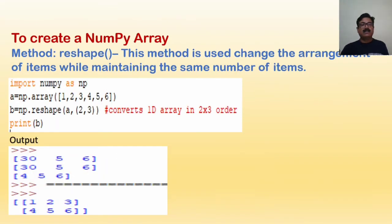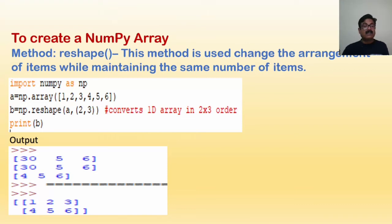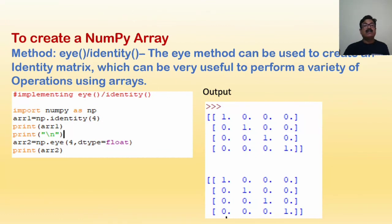The reshape method is used to change the arrangement of items while maintaining the same number of items. The command is import numpy as np, then define an array and use np.reshape(2, 3). So a 2-by-3 shape will be created — a single dimensional array with elements [1, 2, 3, 4, 5, 6] is reshaped into a 2-by-3 array giving rows [1, 2, 3] and [4, 5, 6].